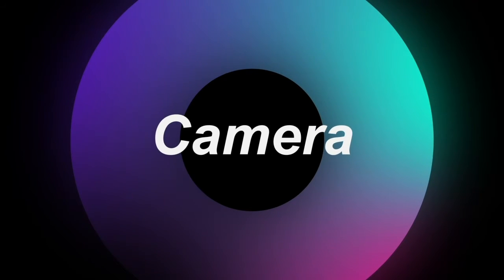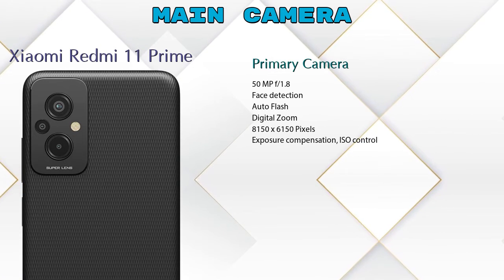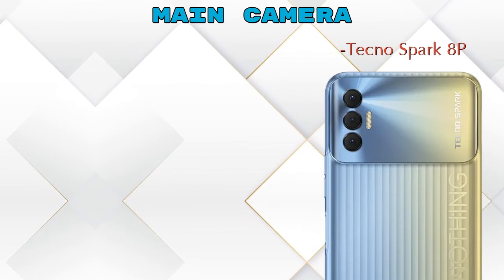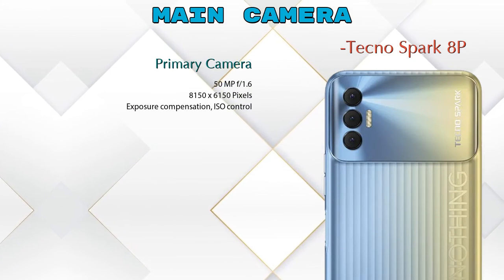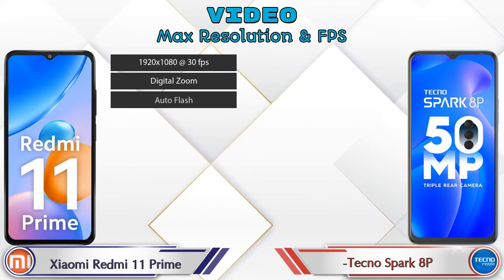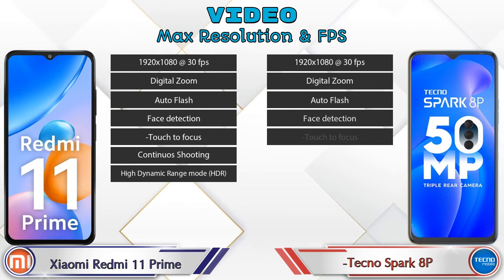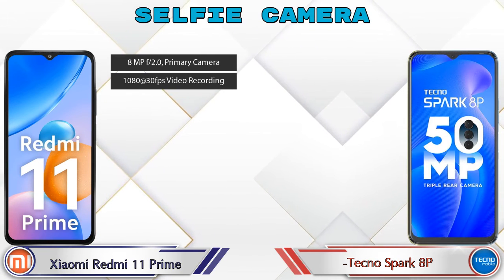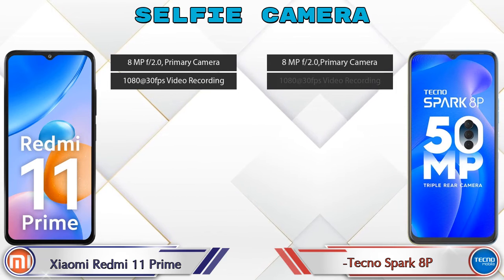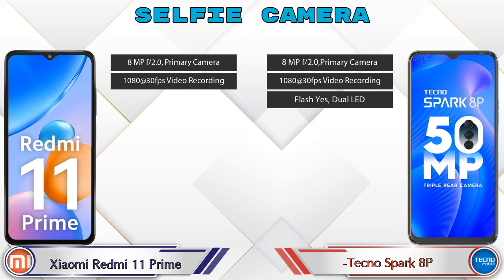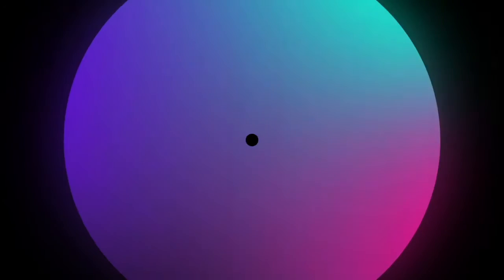Now let's talk about cameras. For the rear camera, Xiaomi Redmi 11 Prime has three cameras: primary, macro, and depth camera. Spark 8P also has three cameras: primary, depth, and AI lens. For video, both phones have seven different types of features available. For the front selfie camera, Xiaomi Redmi 11 Prime has a single camera with two features, and Spark 8P also has a single camera with three features.